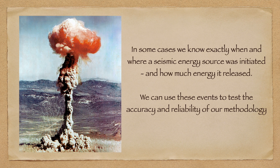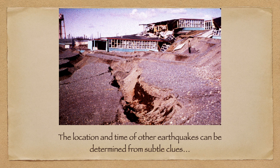Flat earthers often like to claim that seismology simply isn't a scientific discipline because its methodology and results can't be tested. This is, of course, absolute rubbish. There are seismic events whose location and time and magnitude we know very exactly, and we can use these to verify our methodology. It is also not uncommon that patient and painstaking examination of the evidence may reveal subtle indicators of when and where an earthquake may have occurred, though such conspicuous mental agility is most probably beyond the average flat earther.